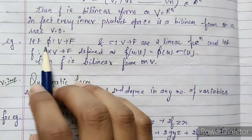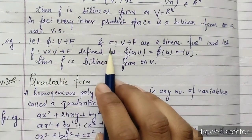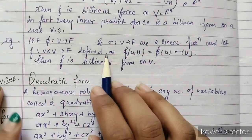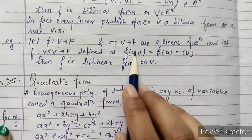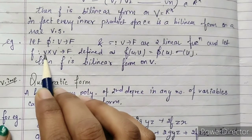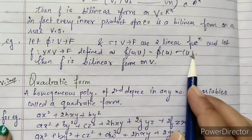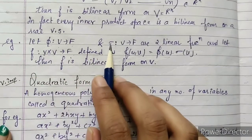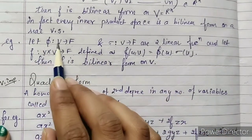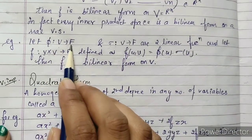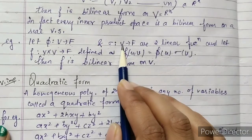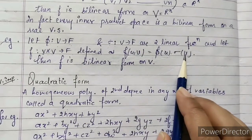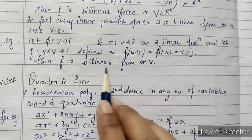Here is another example. Let φ: V → F and σ: V → F be two linear functions. A bilinear form f: V × V → F is defined as f(u, v) = φ(u) · σ(v). You can split it into two functions, φ and σ. Taking φ(u) and σ(v) separately from the domain vector space, then f is a bilinear form on V.